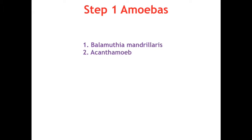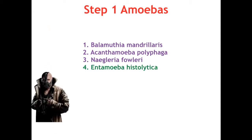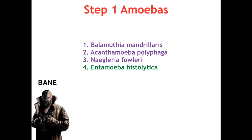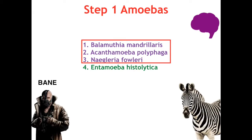Our Step 1 amoebas are: Balamuthia mandrillaris, Acanthamoeba polyphaga, Naegleria fowleri, and Entamoeba histolytica — using the mnemonic BANE. Not only BANE from Batman, but also the bane of our existence as doctors because they're extremely hard to diagnose and even harder to treat. For this lecture we are focusing on the CNS amoebas. We know the phrase 'hear hoofbeats, think horses not zebras' — well, these are your zebras, because they're typically not on your differential when someone presents with meningitis or encephalitis.